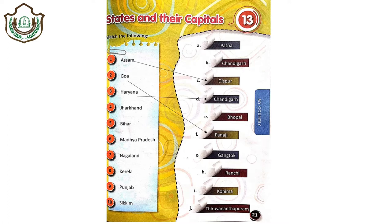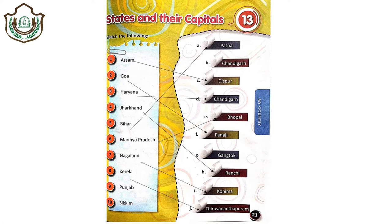Fourth is Jharkhand. Its capital is Ranchi. As you all know, our famous cricketer M.S. Dhoni, he belongs from Ranchi only — the Ranchi boy. Then the fifth one is Bihar, and its capital is none other than Patna. Madhya Pradesh, whose short form is MP, its capital is Bhopal. Nagaland and its capital is Kohima. Then our southern state, Kerala, and its capital is Thiruvananthapuram.